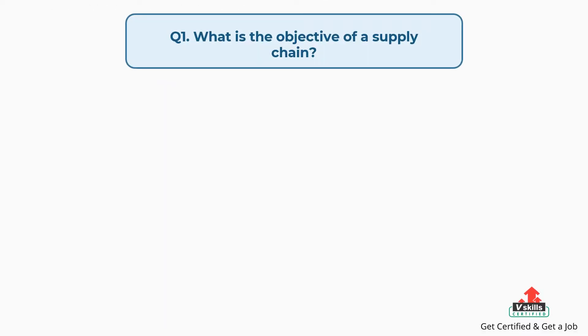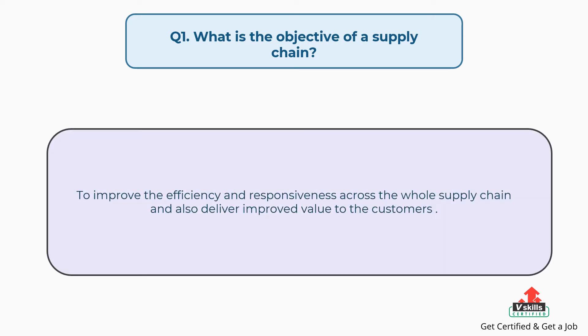Question number one: what is the objective of a supply chain? The answer is to improve the efficiency and responsiveness across the whole supply chain and also deliver improved value to the customers.